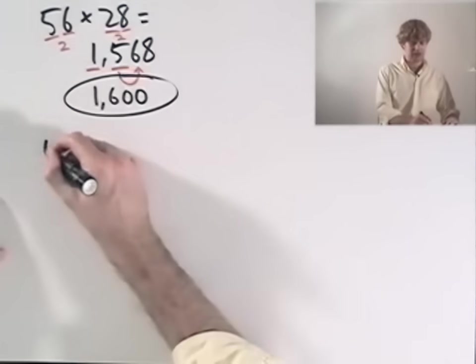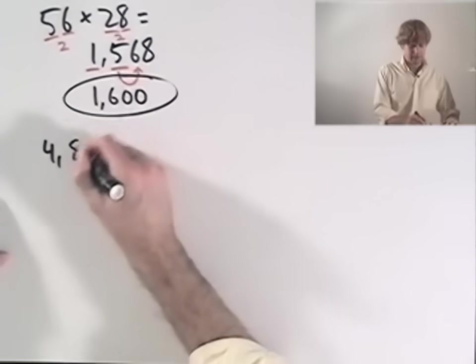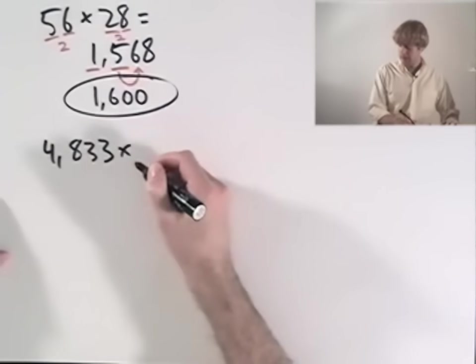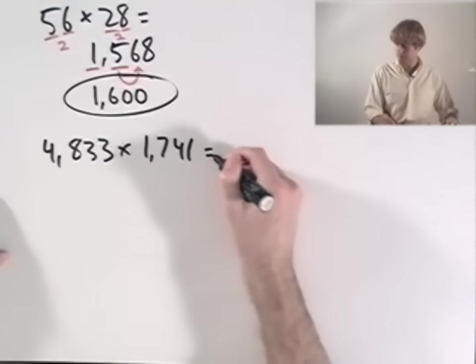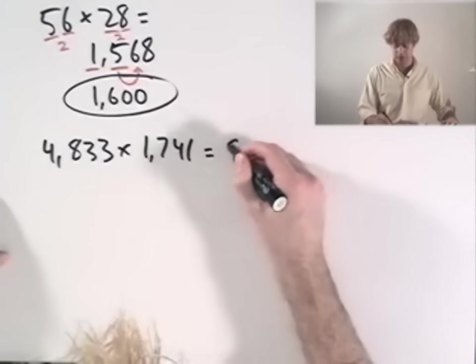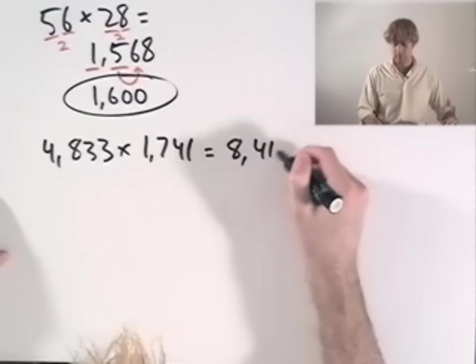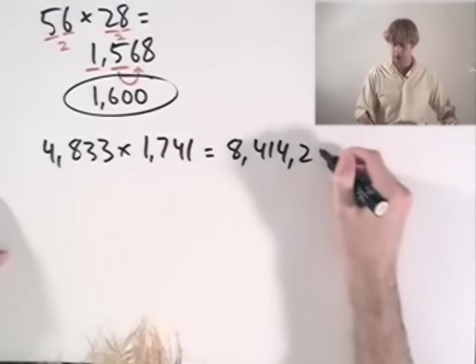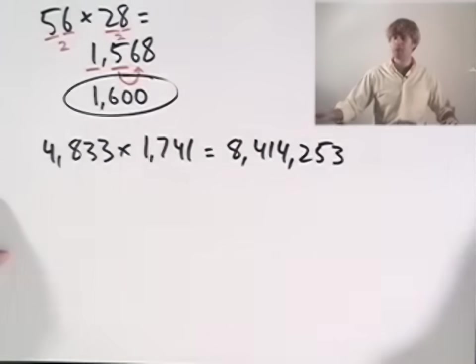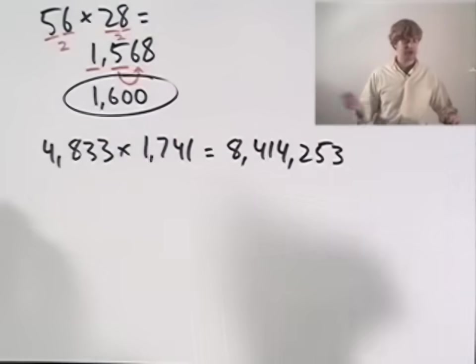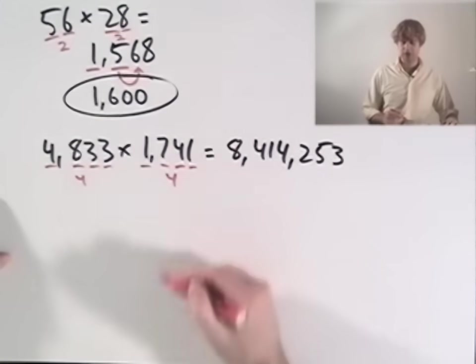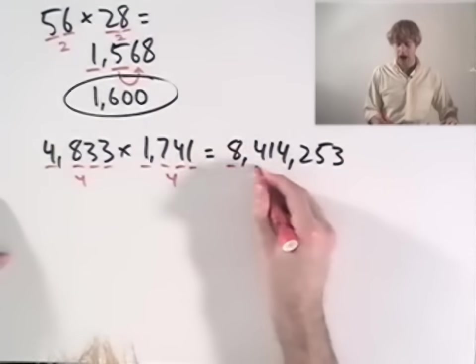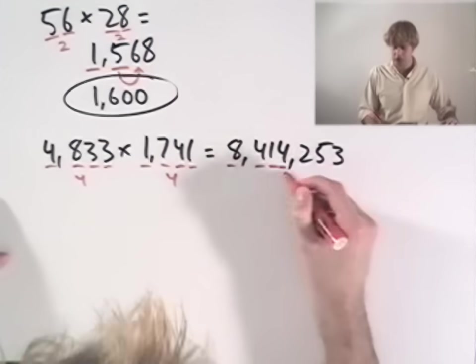If I multiply these guys together, 4,833 times 1,741. I get a really big number, 8,414,253. Again, how can I round this using significant figures? Four significant figures here and four significant figures here. So you guessed it. I round my answer to four digits.